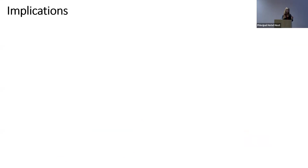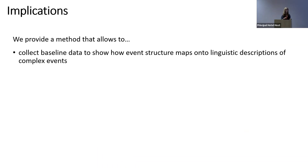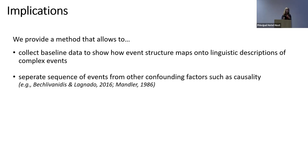Why is this research interesting? First, we provide a method to investigate how event structure maps onto linguistic descriptions of complex events, and we collected first data showing a systematic interaction between two cognitive systems — event structure and language — when it comes to temporal interpretations. Second, focusing on relative clauses allowed us to separate temporal order from other factors, including linear order and causality, which will become increasingly important in our future research.